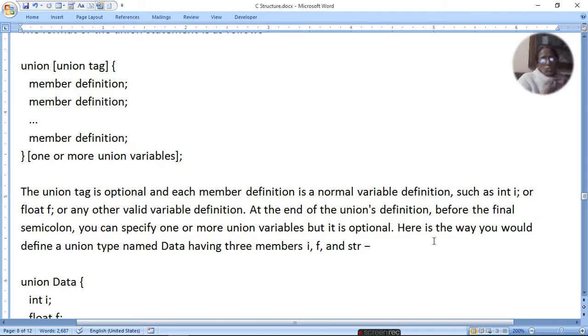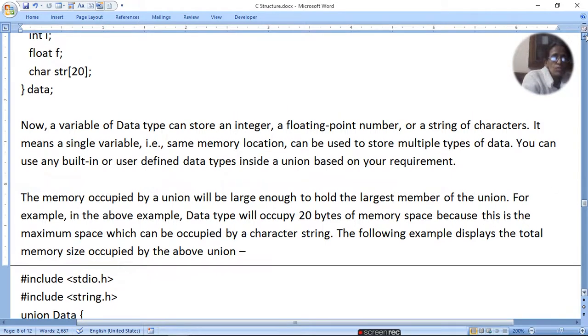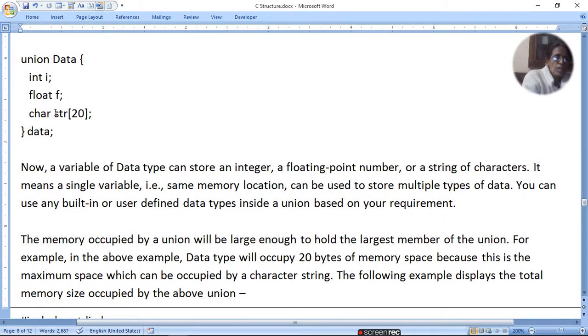Here is a way you would define a union type named data having three members. The first is int, second is float, third is character. Character takes one byte for one character, but here we have defined str[20]. So character will take 20 bytes, float takes 8 bytes, and int takes 2 bytes. That means the maximum size of union data will be 20 characters.